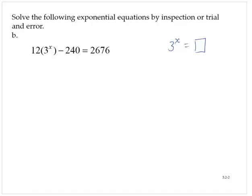So what's happening to the 3 to the x? It's being multiplied by 12, and then something's being subtracted. Let's invert things in the other order. Remember, I'm going to add 240 to both sides.